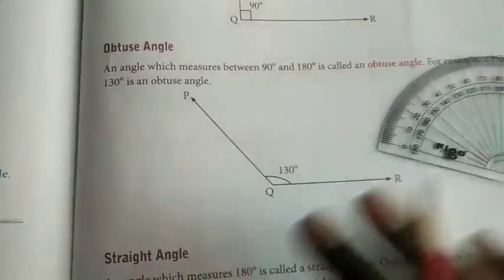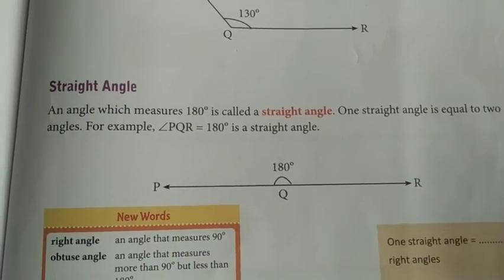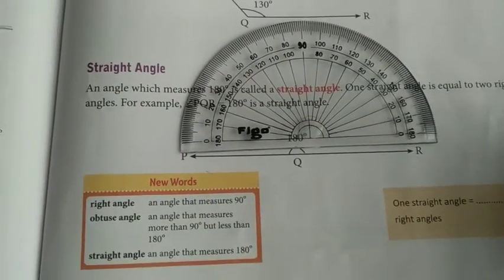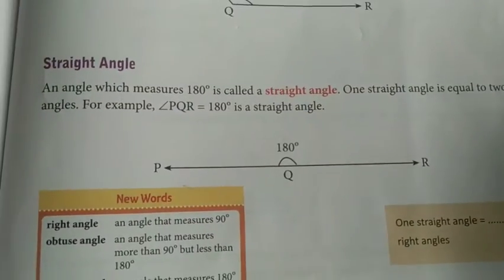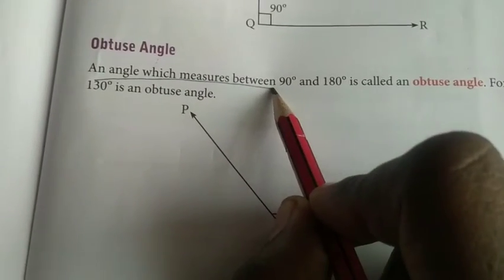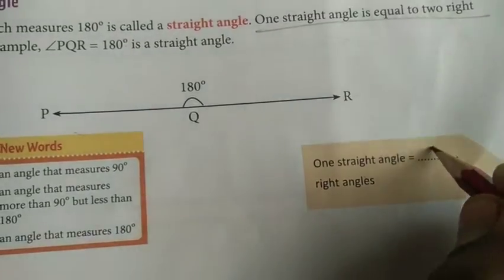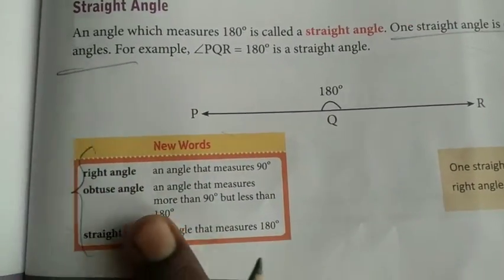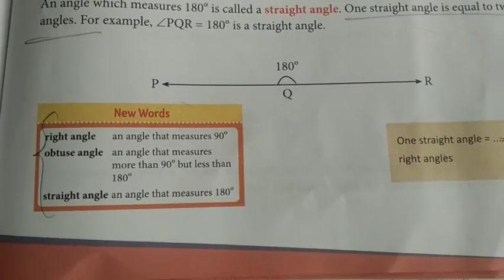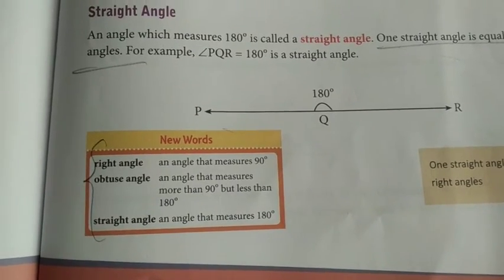Are you clear? The angle which measures 90 degrees is called right angle. From 90 to 180, we can call it obtuse angle. The angle which measures 180 degrees is called straight angle. One straight angle is equal to two right angles. For example, PQR is 180 degrees — our protractor. Please underline: one straight angle is equal to two right angles. An angle which measures between 90 and 180 degrees is called obtuse angle. An angle that measures 180 degrees is a straight angle.